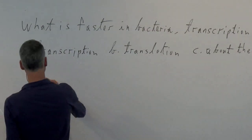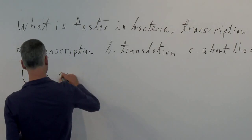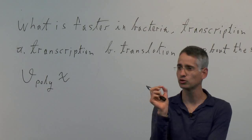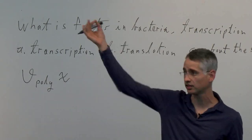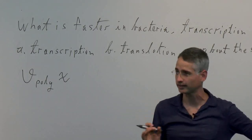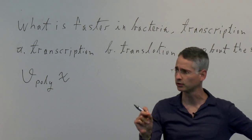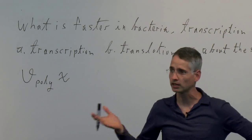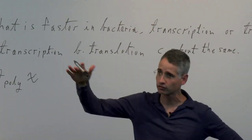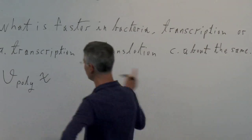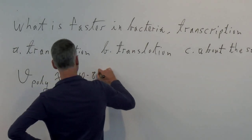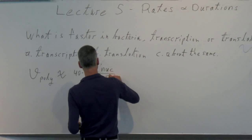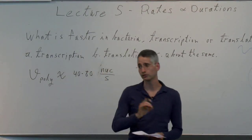The velocity of the RNA polymerase — does anyone remember the scale? These numbers don't come out of thin air; they're key numbers worth keeping close at hand. The rate of the polymerase is roughly 40 to 80 nucleotides per second. That's the characteristic rate of transcription in bacteria.